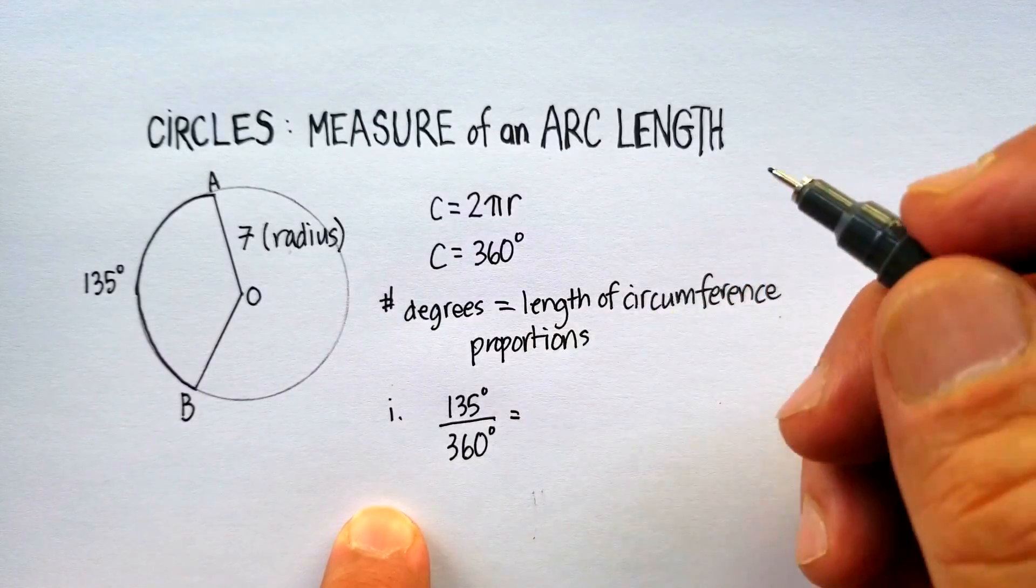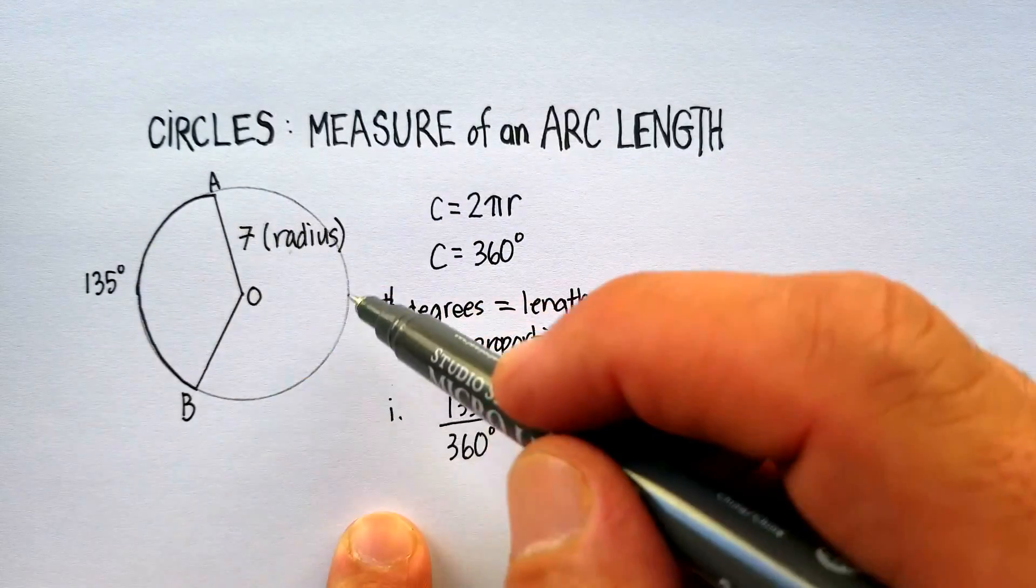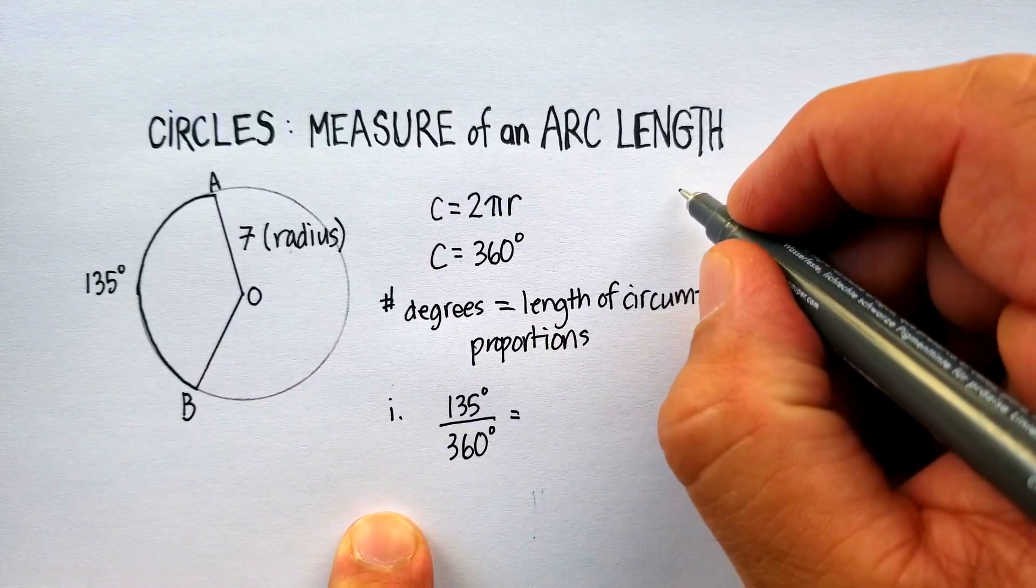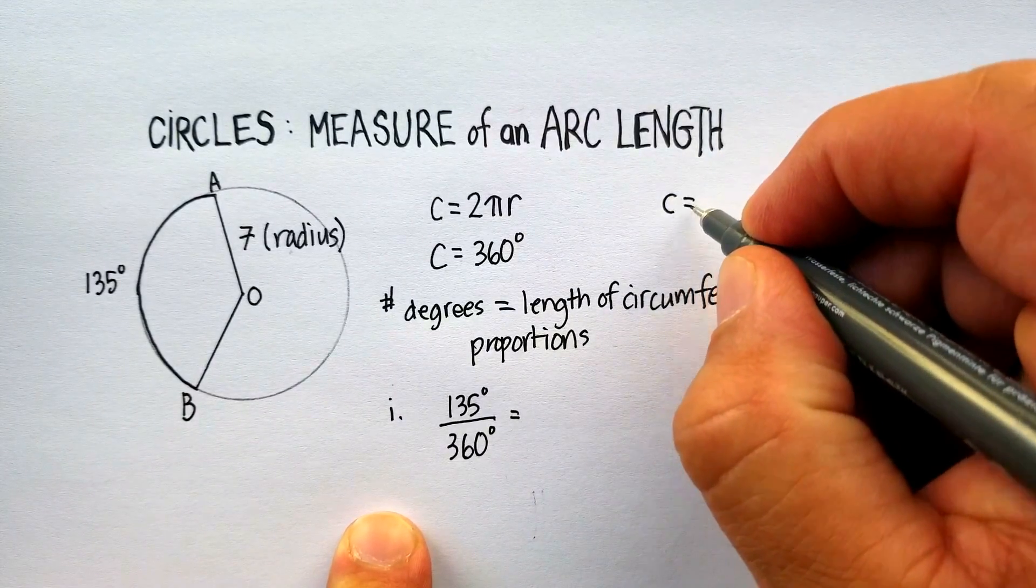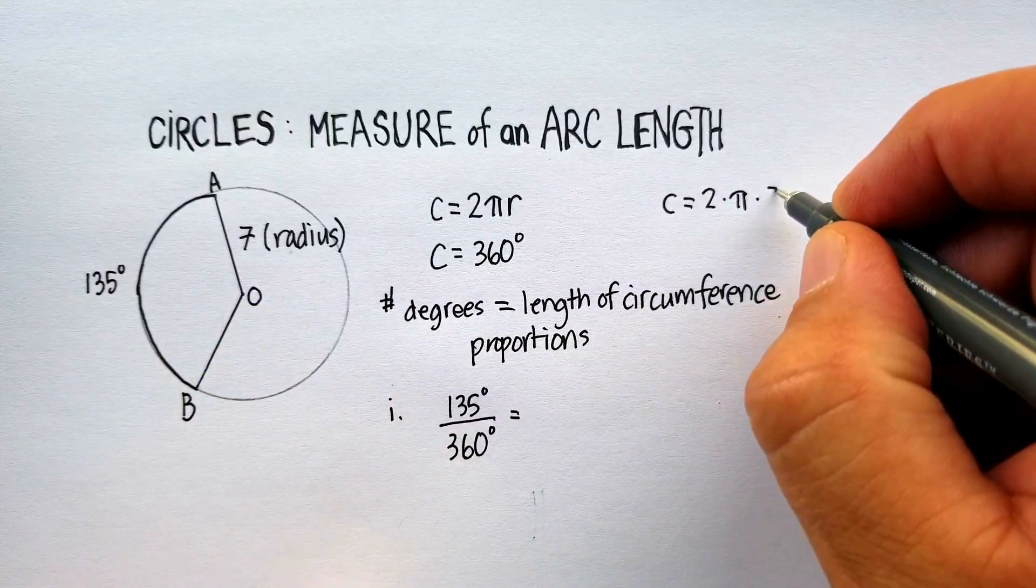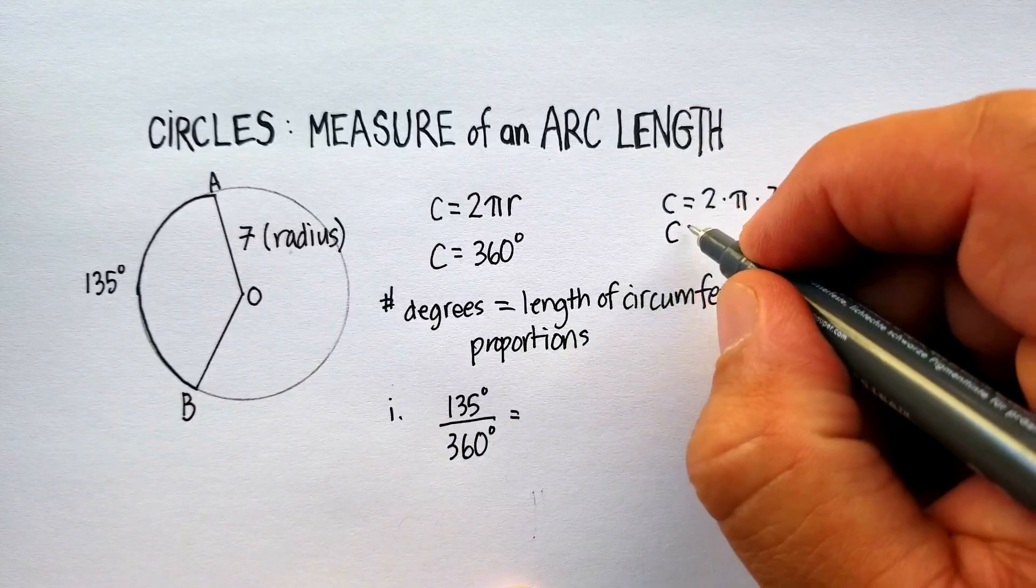We also know that the whole circumference, in terms of length, is 2 pi r. So let's just go off to the side here and say that the length of the circumference is equal to 2 times pi times 7, which is 14 pi. Right?